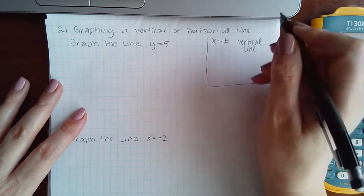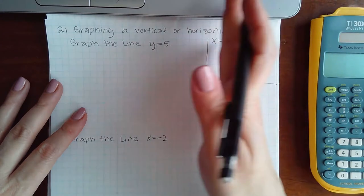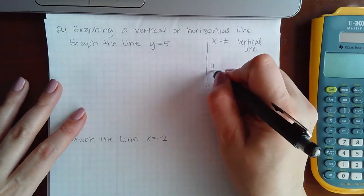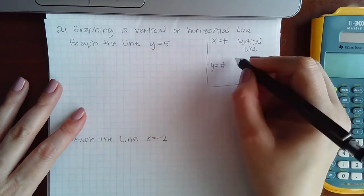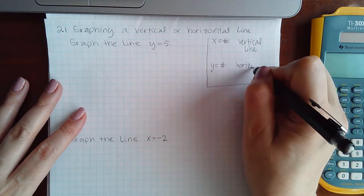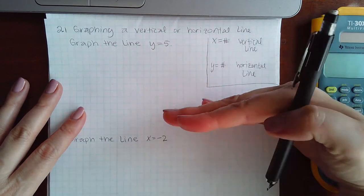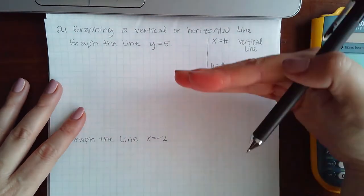And where does that vertical line occur at whatever x value that is. And then y equals a number is going to be a horizontal line.